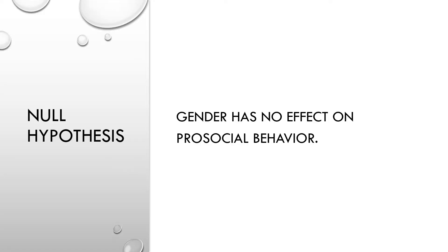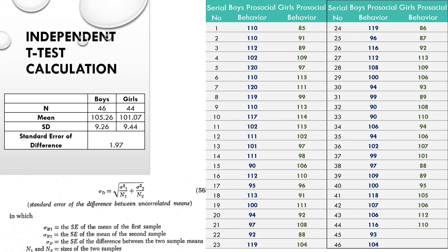Whenever we talk about independent t-test, we basically try to test our null hypothesis. In this example, we take a null hypothesis that gender has no effect on prosocial behavior. There are two groups: the first group is the boys and the second group is the girls.